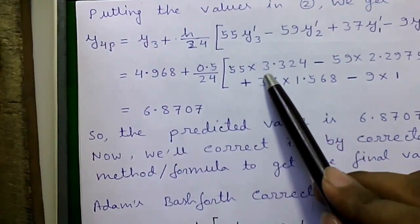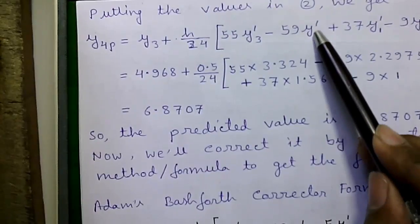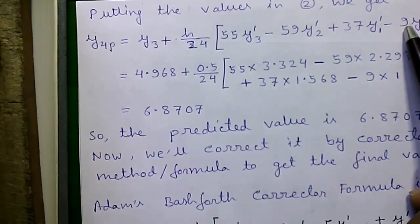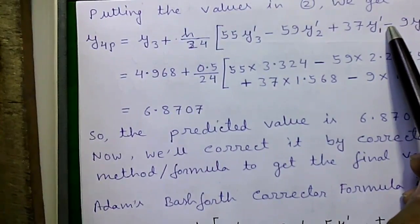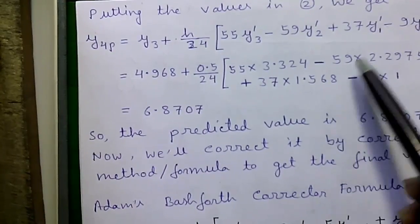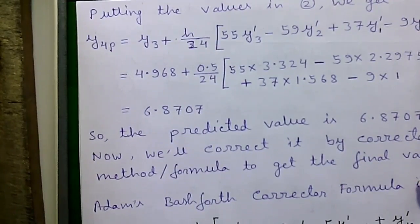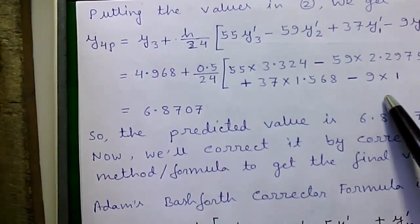So, 55 into y dash 3, this value, 59 into y dash 2, this value, plus 37 into y dash 1, this value, minus 9 into y dash 0, that is 1.